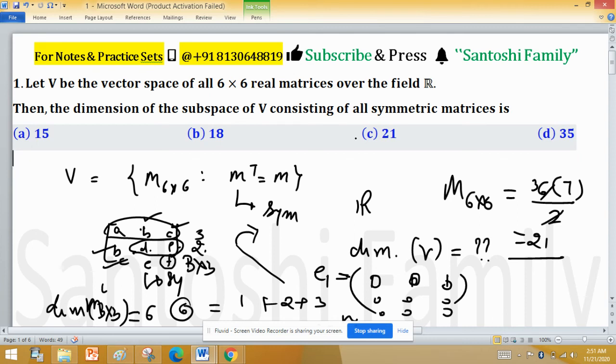But whenever asked about skew-symmetric matrices, the diagonal elements will be 0. It means you are not free to choose elements in the diagonal, so you have to subtract n entries. The formula is n(n plus 1) divided by 2 minus n, which is the general formula for skew-symmetric matrices. Most questions ask about symmetric, sometimes skew-symmetric. Whatever the question, put only the value of n and you will directly get the answer. Option C is the right one here.